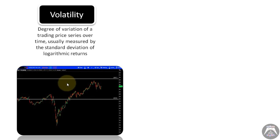It doesn't matter what the instrument is — it could be a stock, a futures contract, a bond — it doesn't matter. As long as it has a price that is changing over time, we can analyze its volatility. If price is changing a lot, there's a lot of volatility. If price is barely changing or the changes are very small over time, then there is a low level of volatility.